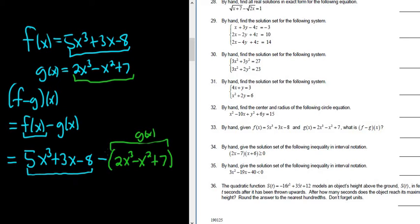Let's distribute the negative 1 here. This equals 5x³ + 3x - 8. Distributing the negative 1: minus 2x³, negative 1 times negative x² is plus x², and negative 1 times 7 is negative 7.